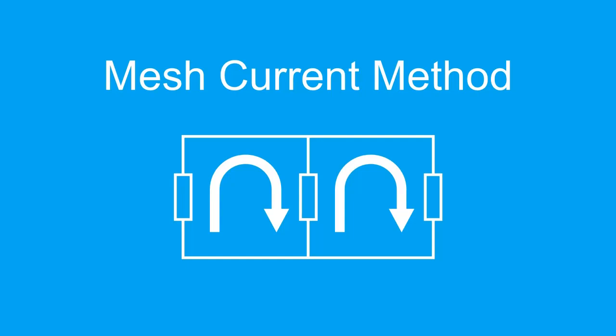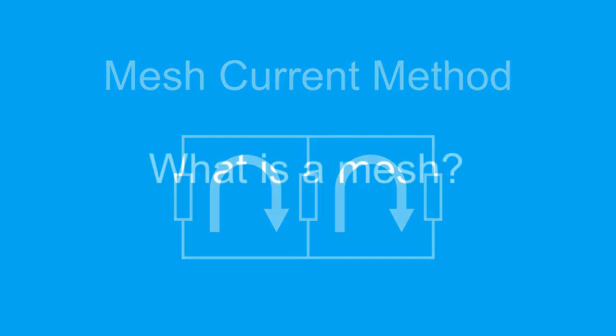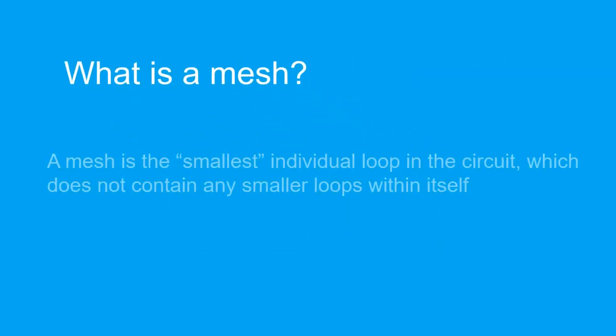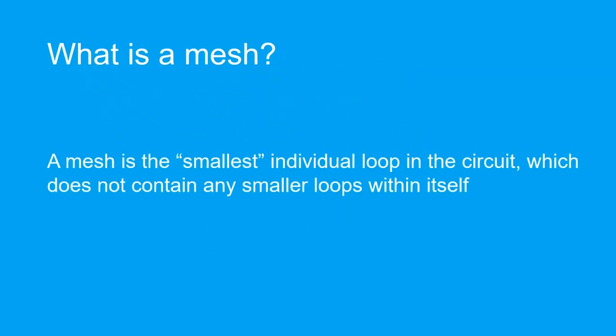In this video, we will learn about the mesh current method. We must first clarify what is a mesh. A mesh refers to the smallest individual loop found in a circuit.